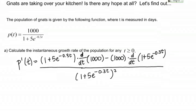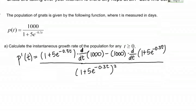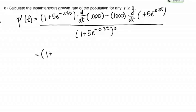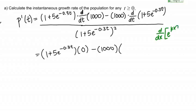Let's continue working out this derivative by working through some of those derivatives on the top. 1 plus 5e to the negative 0.3T times the derivative with respect to time of 1,000 is just a constant, so its derivative is 0, minus 1,000 times the derivative of 1 plus 5e to the negative 0.3T.